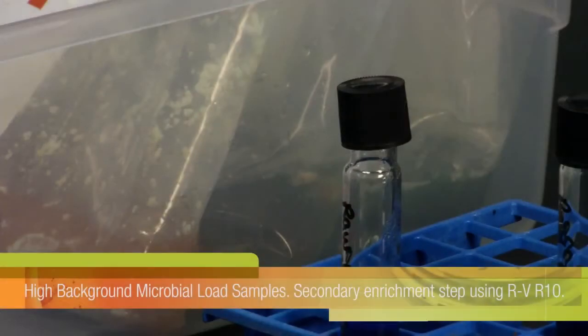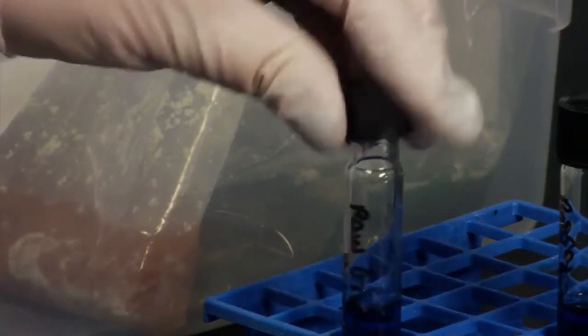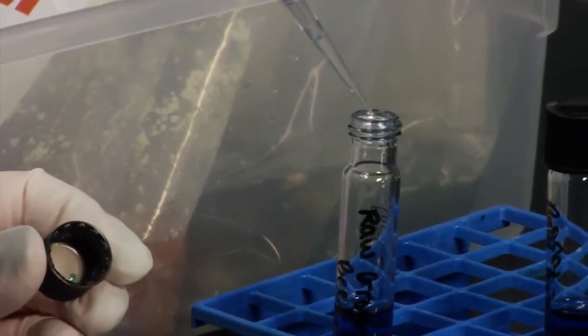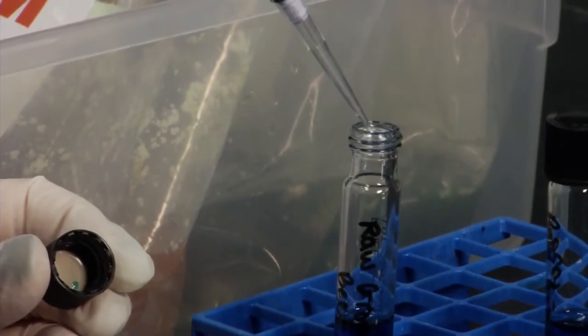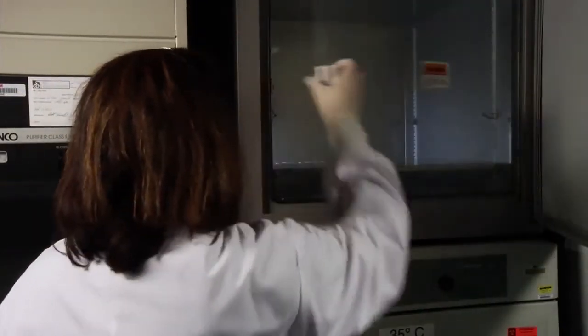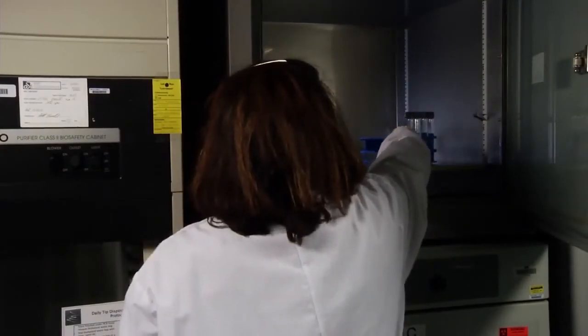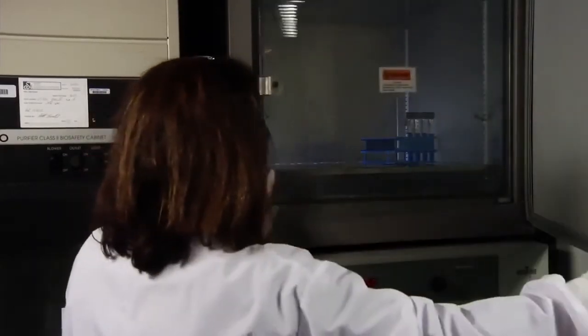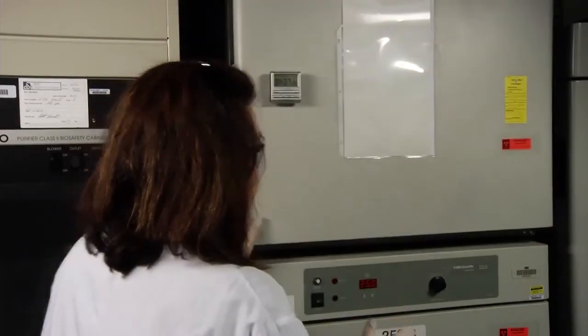For high background microbial load samples, perform a secondary enrichment step by transferring 0.1 milliliter of enrichment medium to 10 milliliters pre-warmed 3M RVR10 broth. Incubate the RVR10 at 41.5 degrees plus or minus 1 degree Celsius for 8 to 24 hours. The incubation range allows for laboratory flexibility.